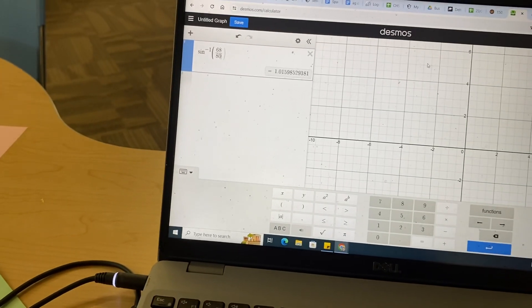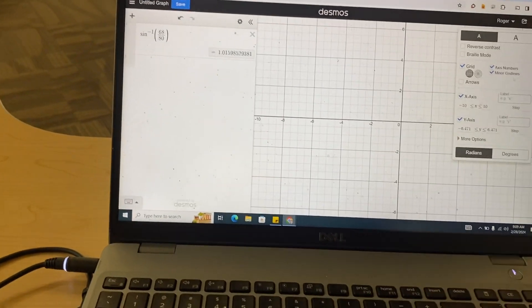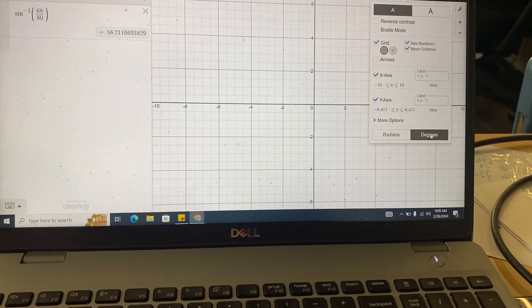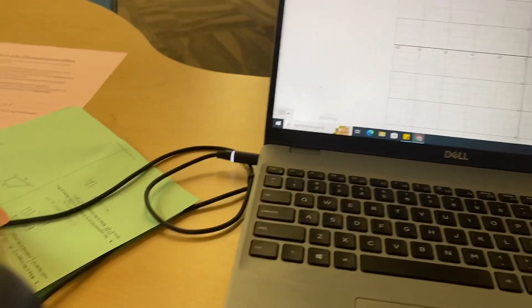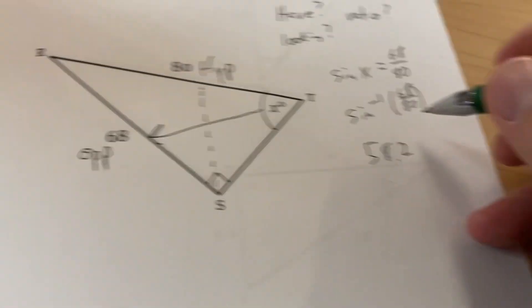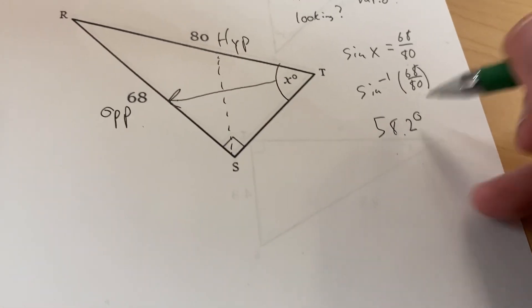This says 1.01, which I'm guessing is not correct. So I need to check my settings and make sure I'm in degrees. That changed it to 58.21, so this is a 58.2 degree angle.